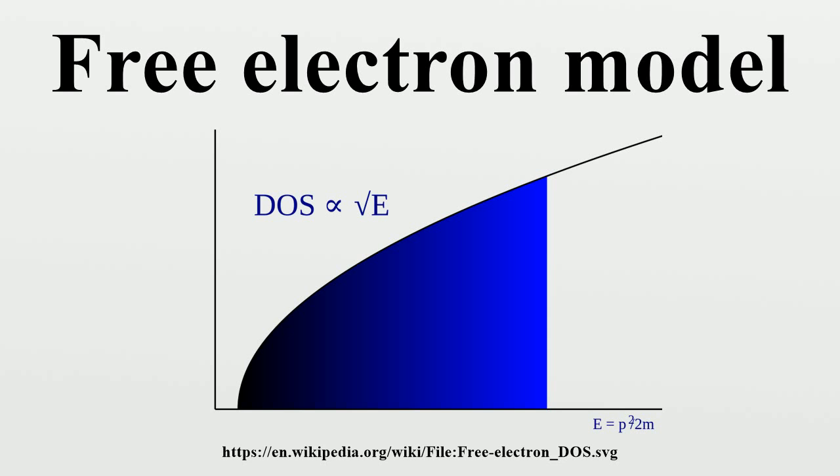Fermi energy: According to the Pauli principle, the electrons in the ground state occupy all the lowest energy states, up to some Fermi energy. Since the energy is given by the kinetic formula, this corresponds to occupying all the states with wave vectors k less than or equal to the so-called Fermi wave vector kF.